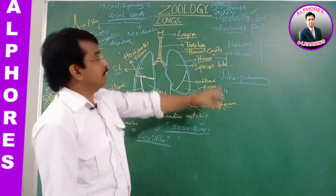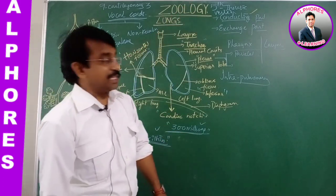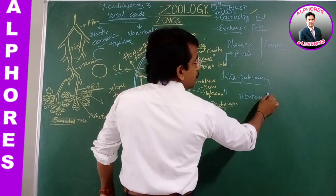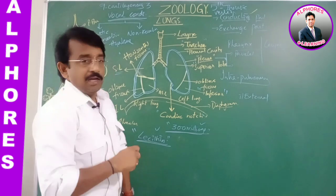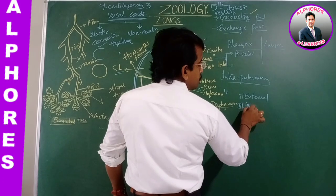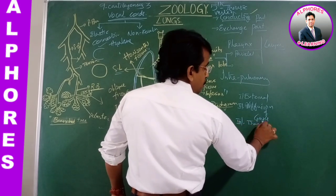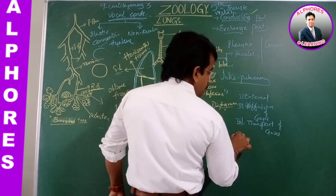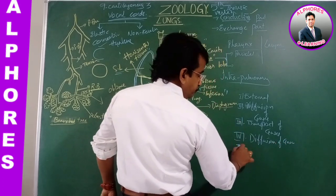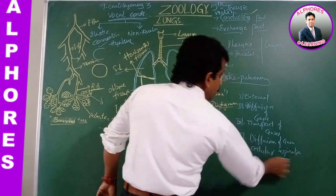The respiration process involves two structural parts: the conducting part and the exchange part. The process of respiration can be discussed under five phases: first, external respiration; second, diffusion of gases between lungs and blood capillaries; third, transport of gases; fourth, diffusion of gases between blood and tissues; and fifth, cellular respiration.